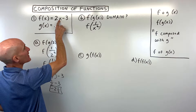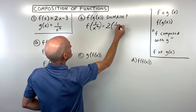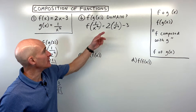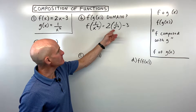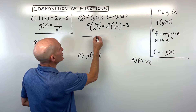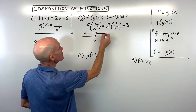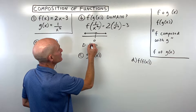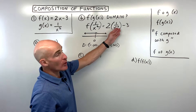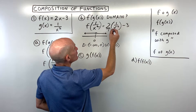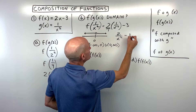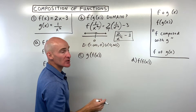Whatever's in parentheses goes in for x on the right, so f of g of x equals 2 times 1 over x squared minus 3. Before simplifying, I like to look at the domain. I can see that I cannot divide by 0 — that's undefined. So the domain is from negative infinity to 0, not including 0, and then from 0 to positive infinity. Simplifying: 2 over x squared minus 3.